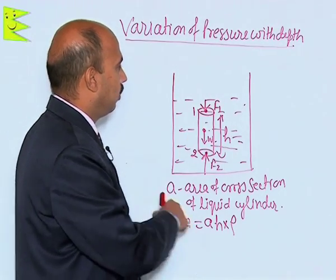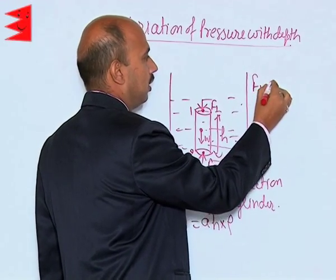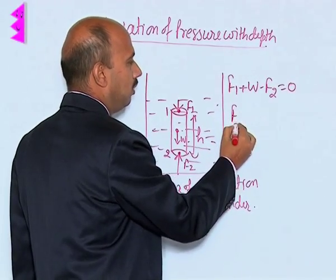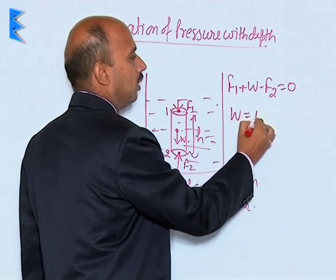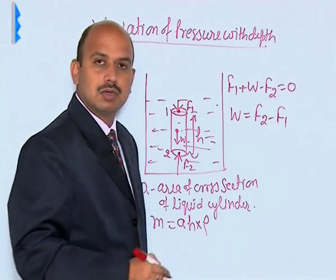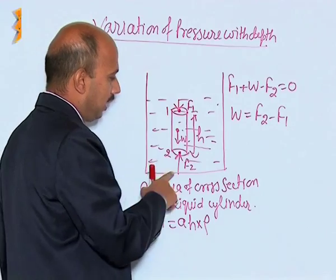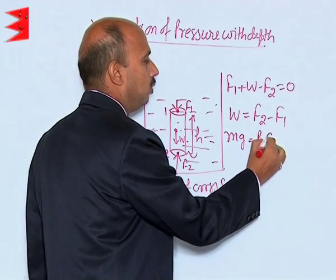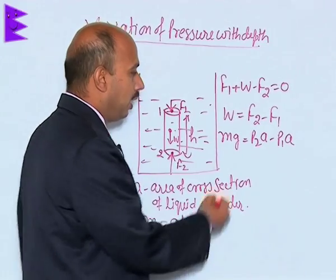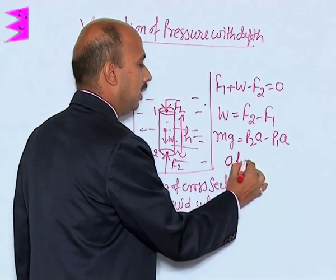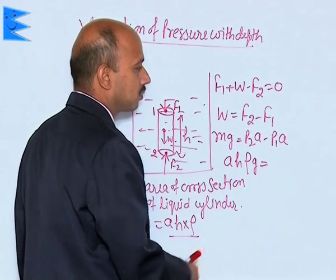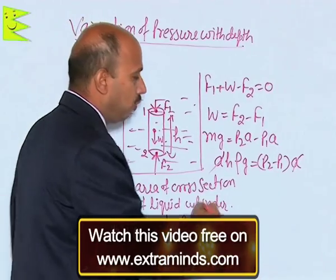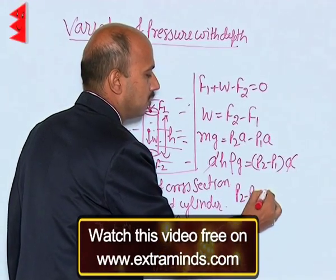In equilibrium we can write: F1 + W − F2 = 0, which gives W = F2 − F1. The pressure at point 1 is P1 and at point 2 is P2. So we write: Mg = P2·A − P1·A. Since mass M = A·H·ρ, we substitute: A·H·ρ·g = (P2 − P1)·A. The A cancels, giving P2 − P1 = H·ρ·g.